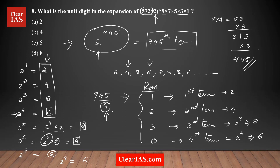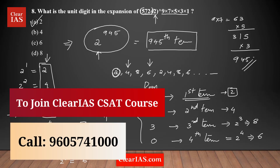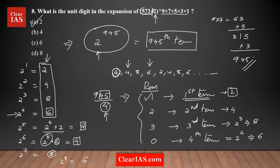So the next step is to divide 945 by 4. Using the divisibility rule for 4, you only need to divide the last two digits: 45 ÷ 4 gives a remainder of 1. A remainder of 1 means the unit digit corresponds to the first term in the series, which is 2. So the answer is option A. We are dividing by 4 because the pattern length is 4, and the unit digit is determined by the remainder when you divide the power by 4.